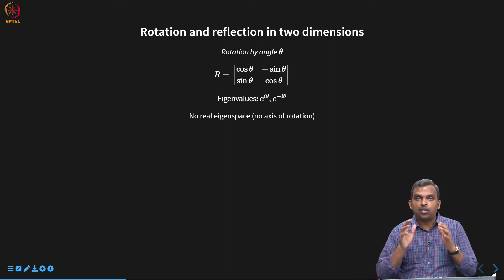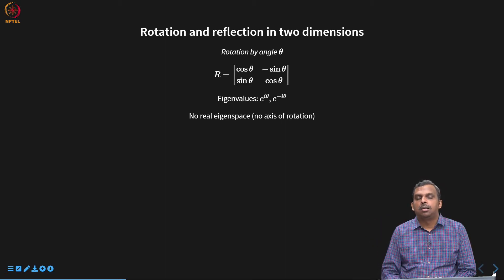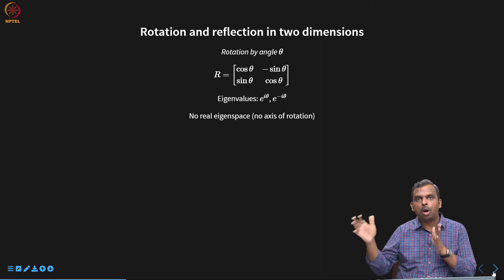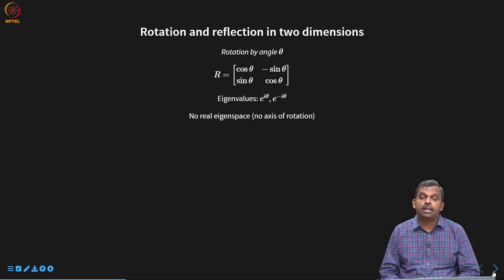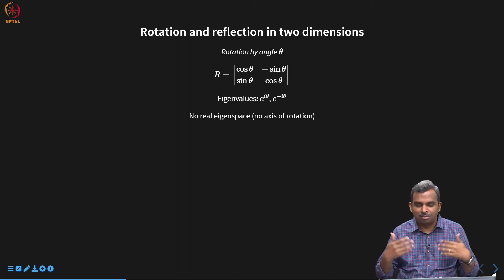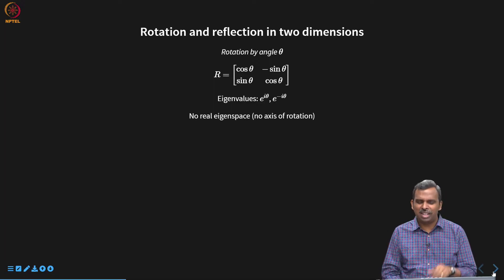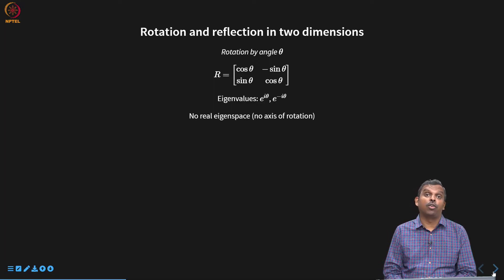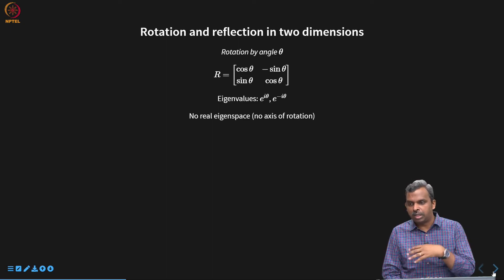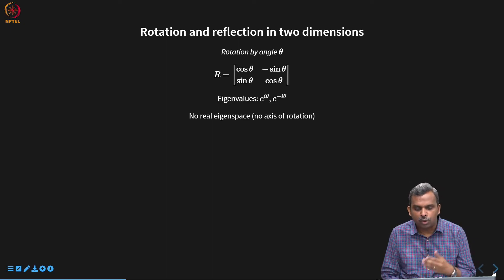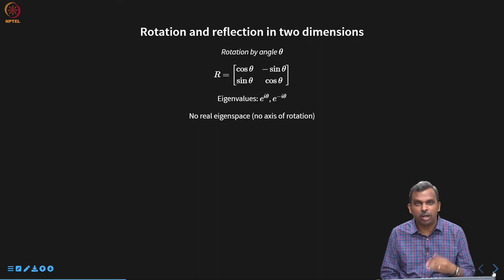When we look at isometries, we can split the word: 'iso' means something that remains the same, and 'metric' usually refers to the norm. So an isometry is an operator that does not change the norm. We are looking for operators which do something to the vector but do not change the norm.